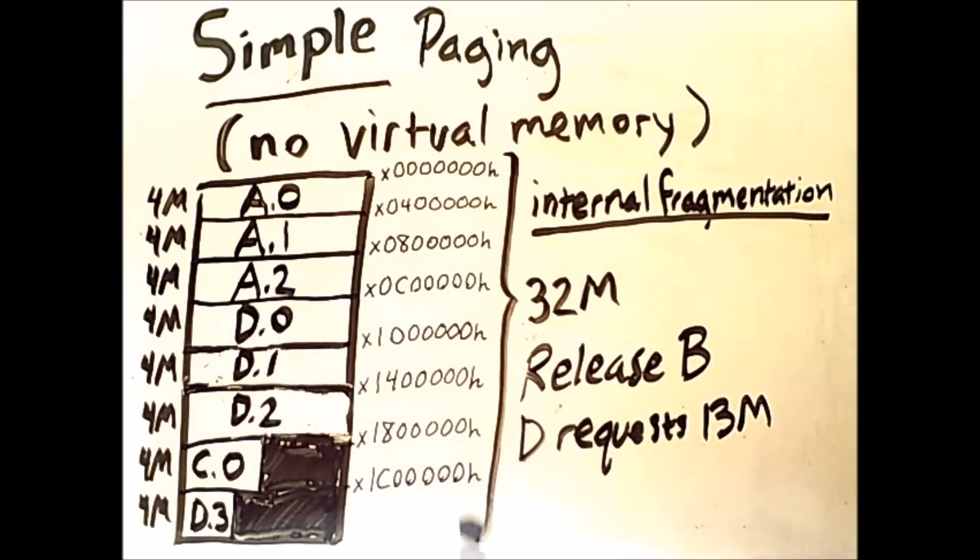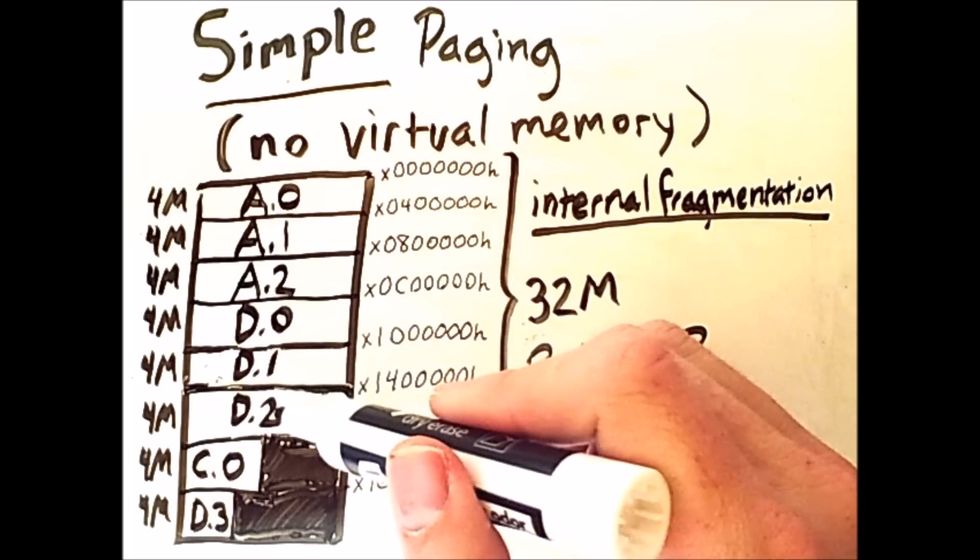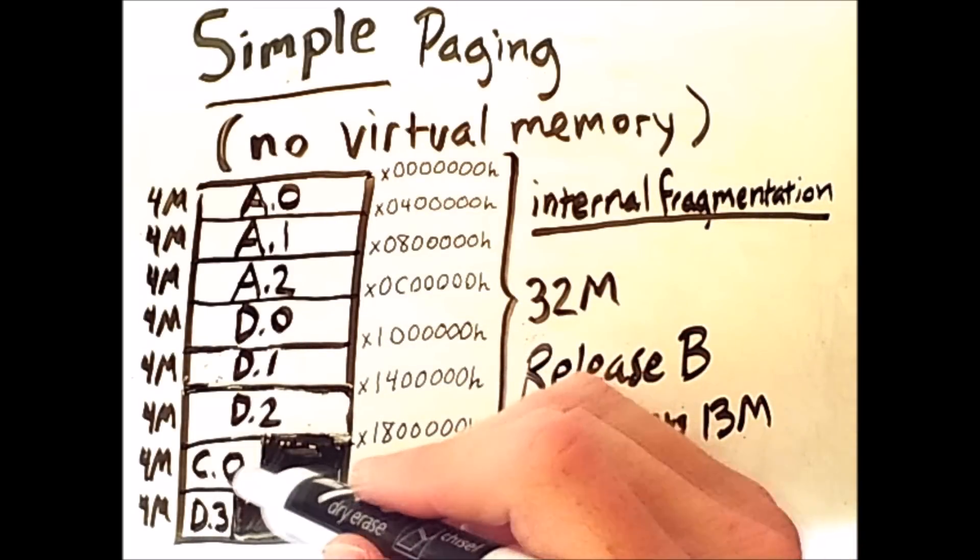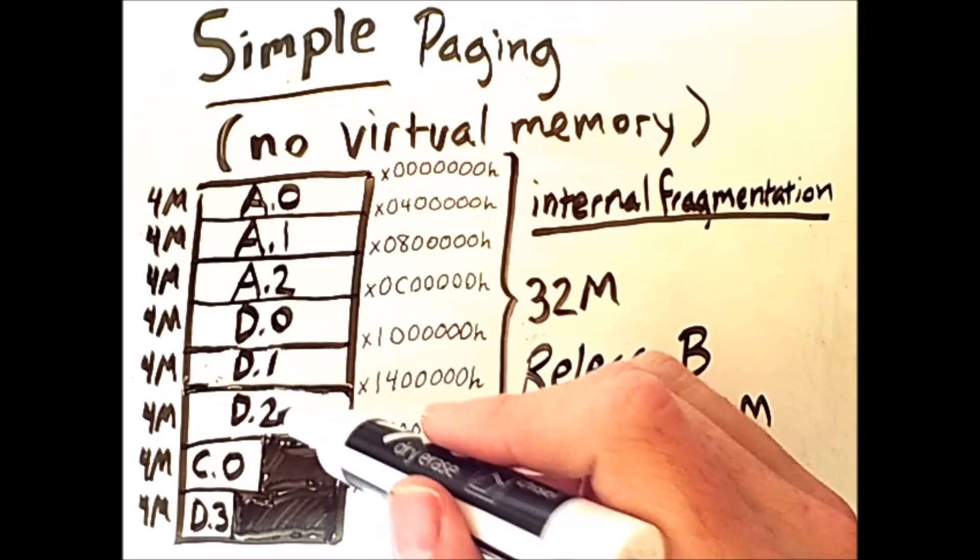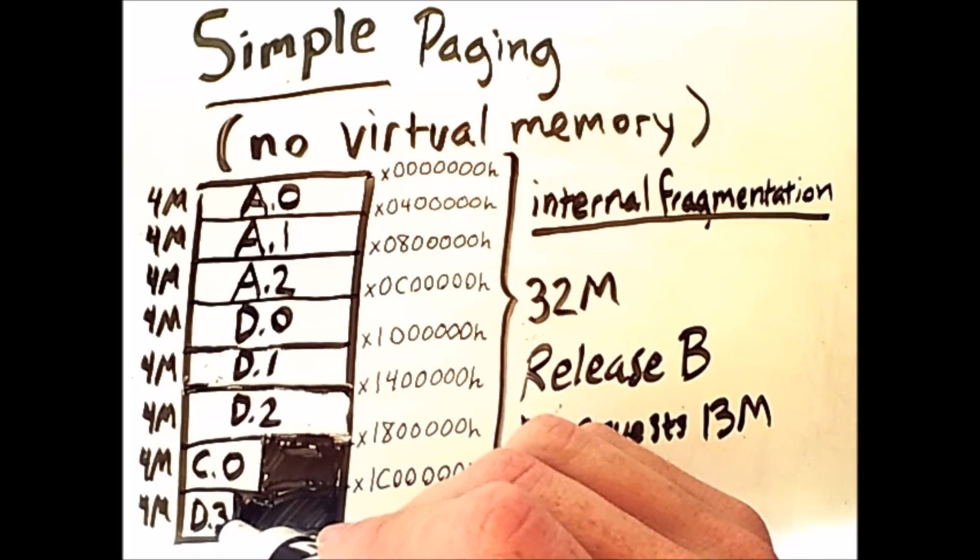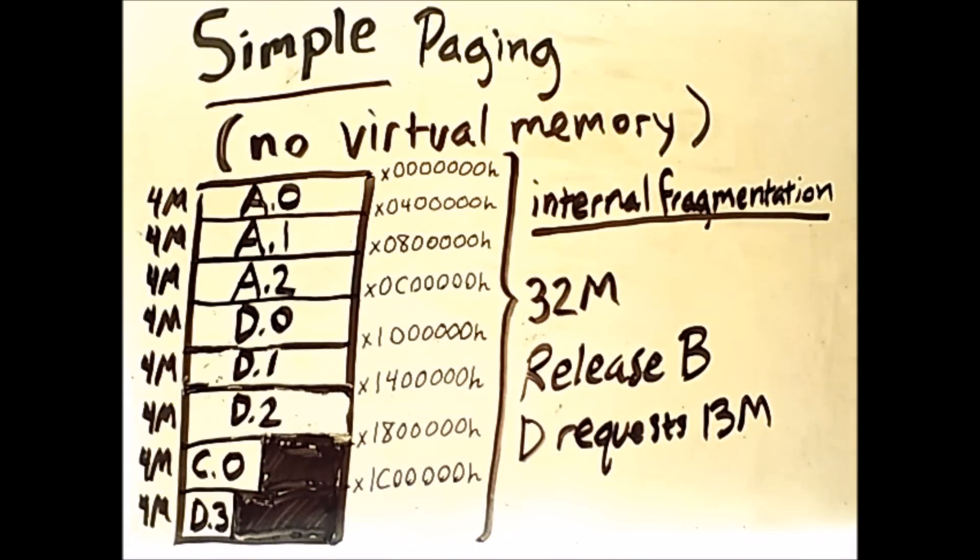So when we put D into memory, it will look like this. So now that D has been placed into memory, we see that pages 0, 1, and 2 come before the frame containing process C, and that page 3 of process D is on the other side of the frame containing C. And because D requires 13 megabytes, it means this last page only consists of 1 megabyte, therefore we have even more internal fragmentation than before.